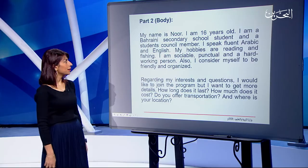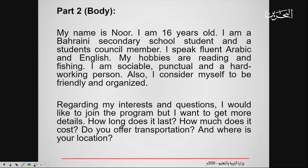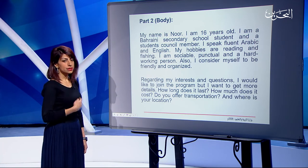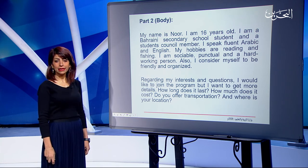Now let's move to the second paragraph — this is where you put information about yourself because you're applying for a program. 'My name is Noor, I am 16 years old, I am a Bahraini secondary school student and a student council member.' Since you are a student you have to mention if you are a member of something. 'I speak fluent Arabic and English. My hobbies are reading and fishing.' Then state your qualities: 'I am sociable, punctual, and a hard-working person. I also consider myself to be friendly and organized.'